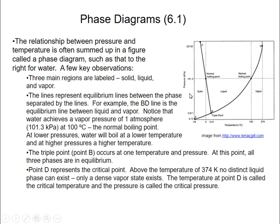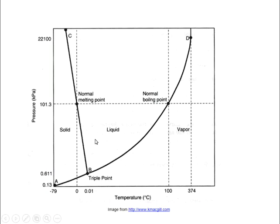The relationship between pressure and temperature is often summarized in a figure called a phase diagram. Pressure is on the vertical axis and temperature on the horizontal axis. For example, water at 50°C and 101.3 kilopascals (one atmosphere) falls in the liquid region of the diagram. Given any temperature and pressure pair, you can locate it on the graph and determine whether the substance is a liquid, solid, or vapor.